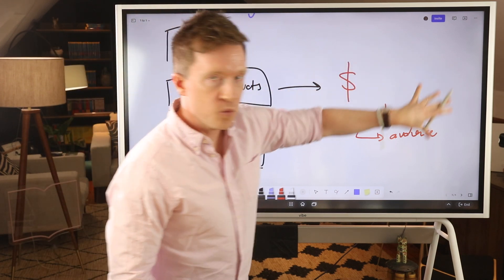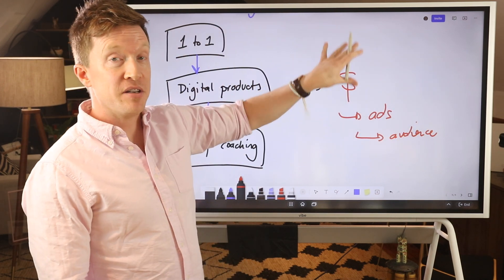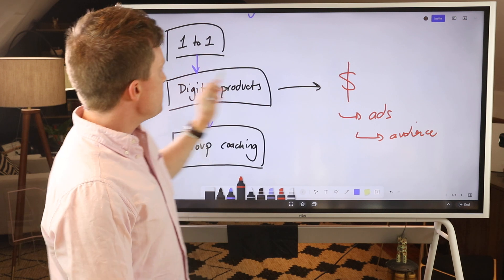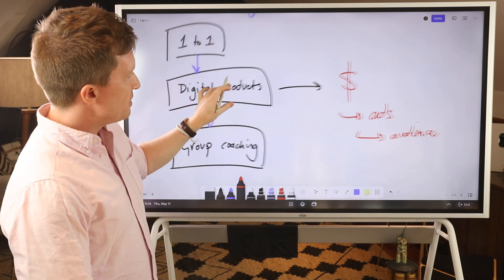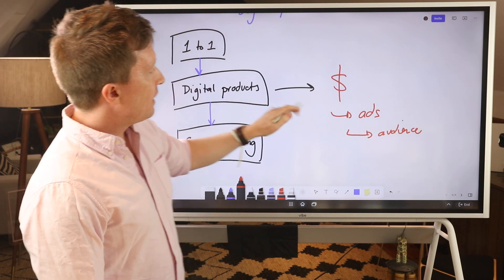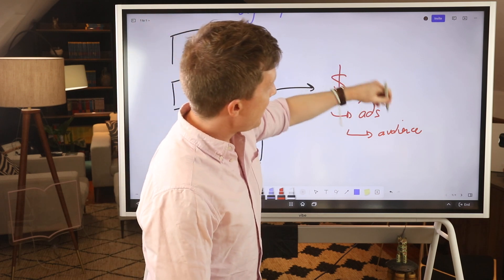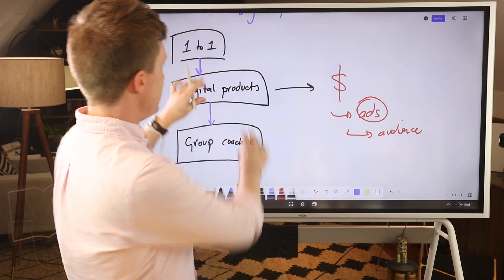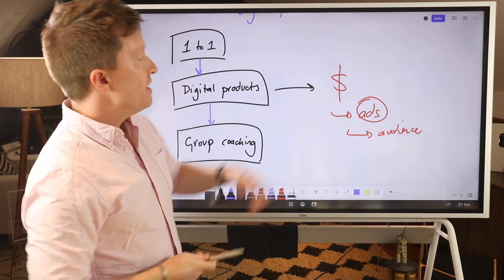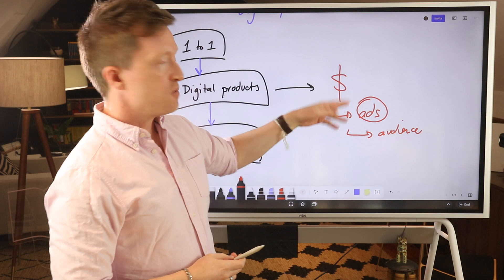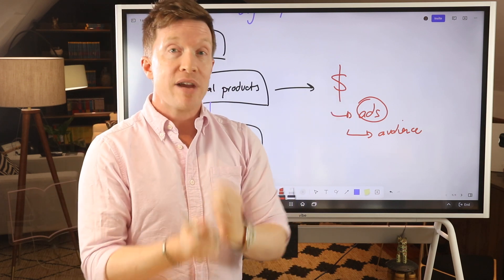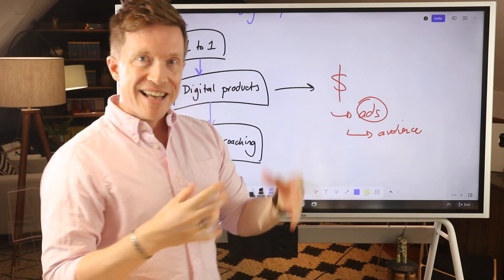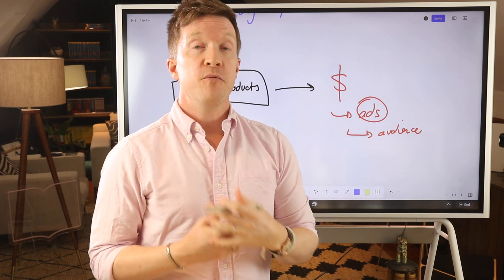Now you can get this, this whole section here of running ads is a big conversation, but once you've got the digital products, what that also allows you to do is to include those digital products in your ad funnels, which liquidates the cost of running the ads in the first place. So having created these digital assets here, if you do it well, you should be able to run ads at least at breakeven.